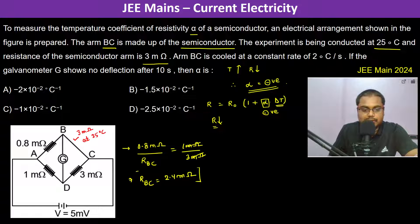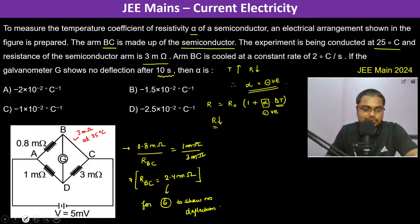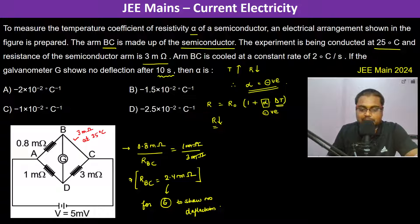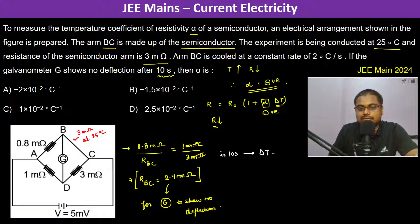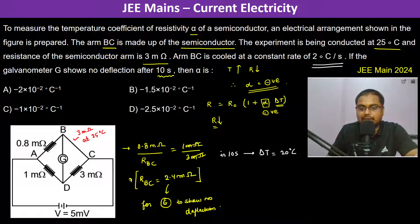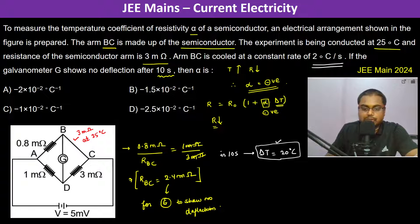So 2.4 million, and this is after 10 seconds. In 10 seconds, how much delta T is there? 2 degree centigrade per second times 10 seconds, therefore 20 degree centigrade it has arisen.